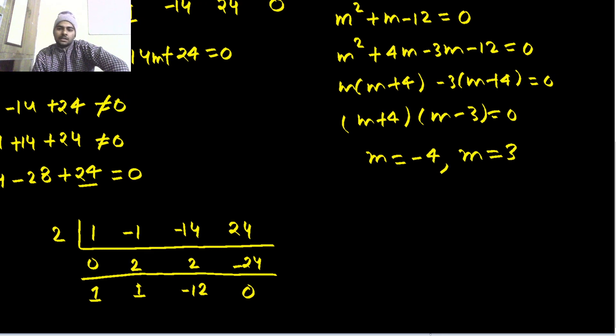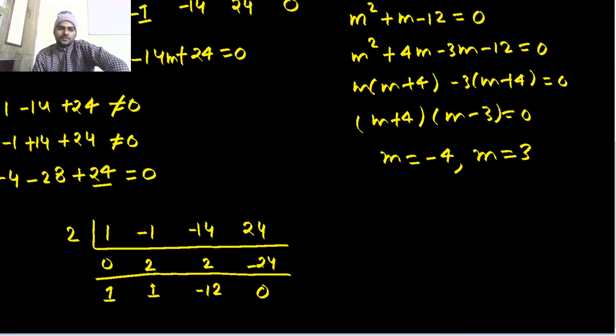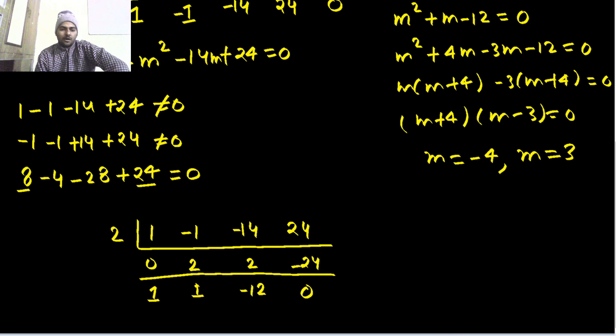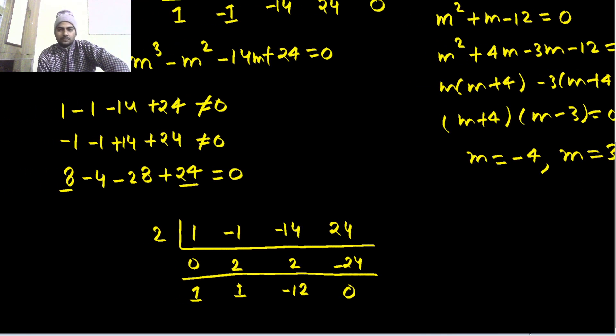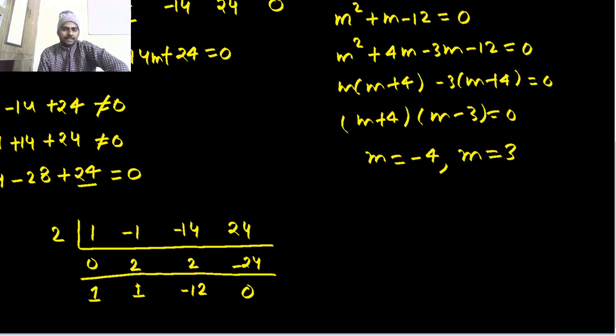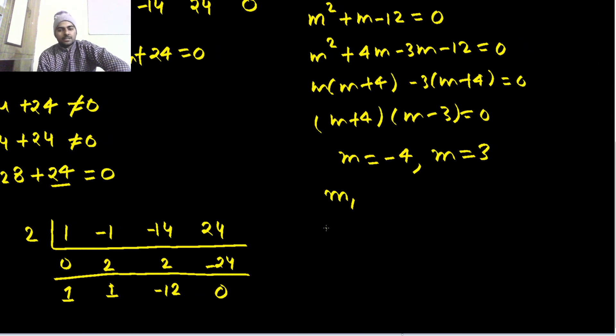So (M + 4)(M - 3) = 0. What are the roots we've got? We started with 1, then 2, then from factorization -4 and 3. So M1 = 1, M2 = 2, M3 = 3, M4 = -4.